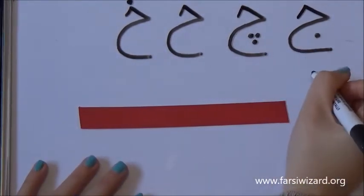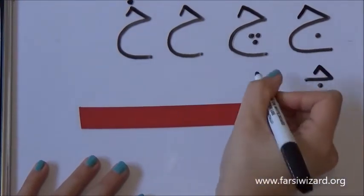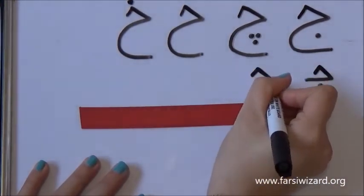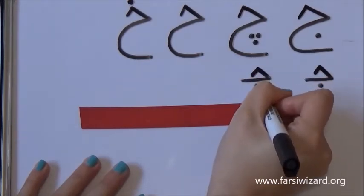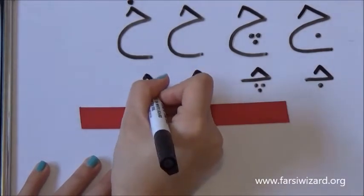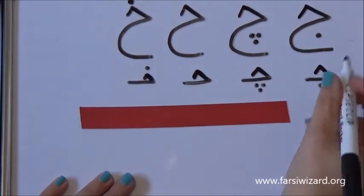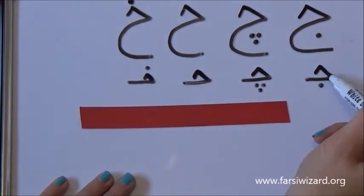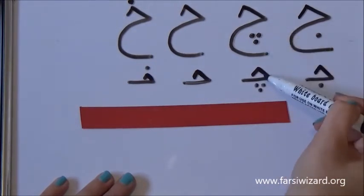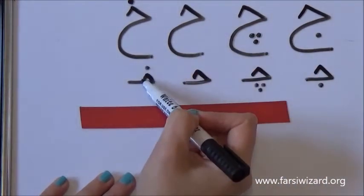Now, I'm also going to write for you the small version or the joint version of these letters. For now, just look at them. Don't worry about how each of these letters sounds. In fact, we are just practicing how to write them at this stage. As you can see, the big letter has the belly and the small letter doesn't have that belly. But the number and the place of dots would be fixed.